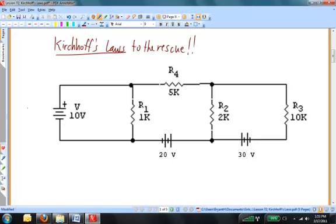There are actually two rules: the current law, also known as the junction rule or the point rule, and the voltage law, which is also called the loop rule. And here's what they say.